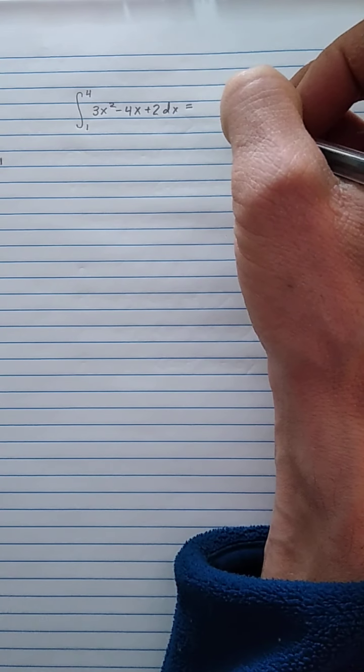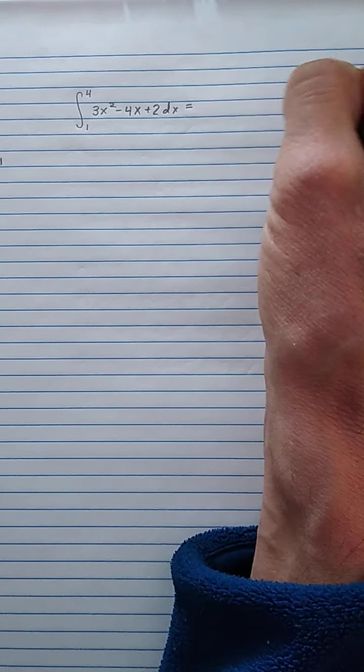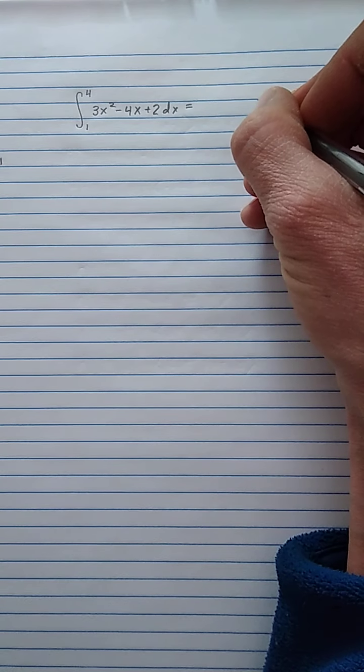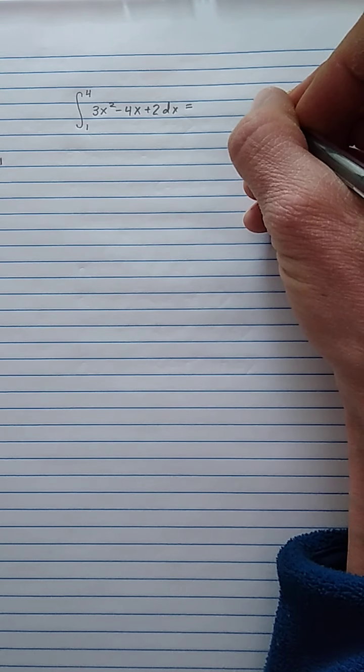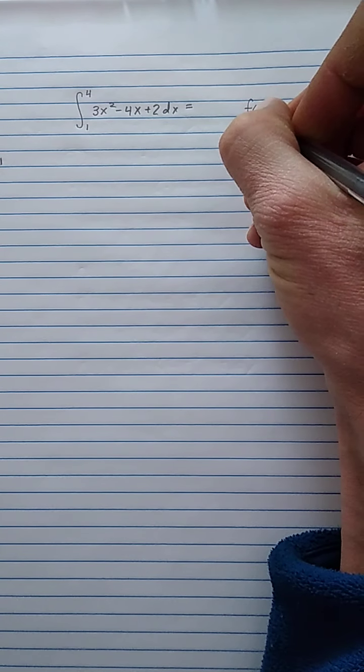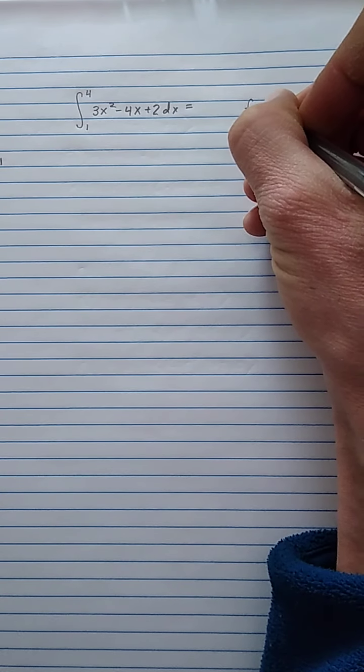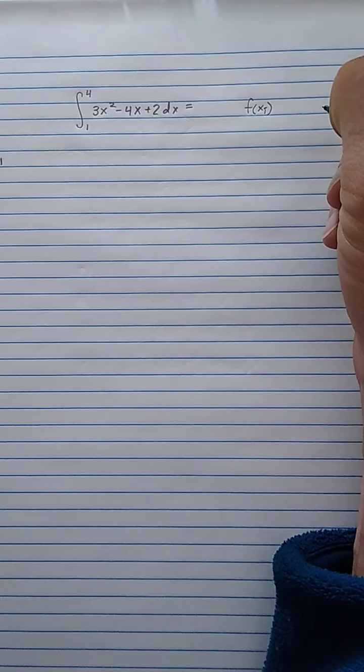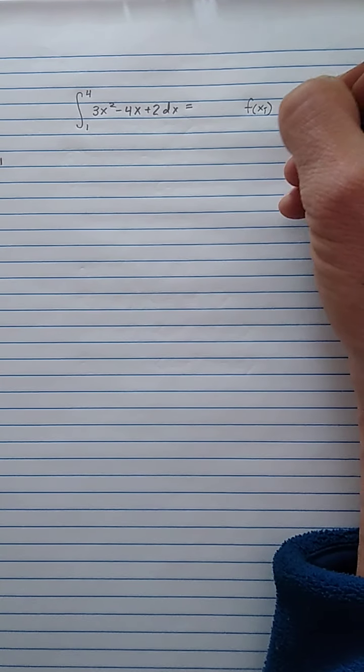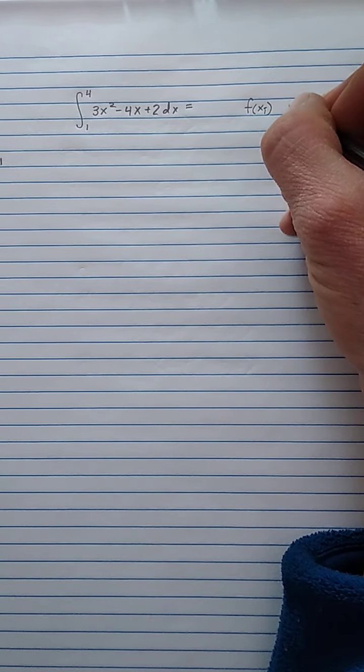So remember, Riemann sum is just like doing the boxes and breaking it in rectangles. So we have the height of each rectangle. So that's going to be f, or our function here, we'll call that f, of, and then it's a test point, which we don't have a name, so we'll call that x sub i. So each of the, like, the left-hand point or the right-hand point, the midpoint, whatever you're using.